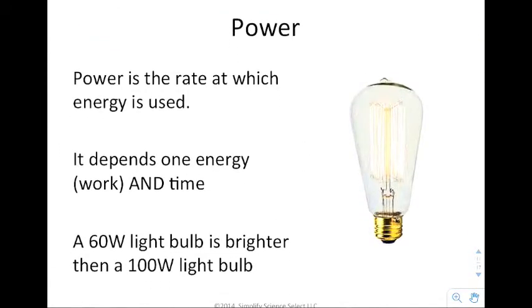Power is the rate at which energy is used, and it depends on energy, work, and time. A 60 watt light bulb is brighter than a 100 watt light bulb. If you plug them in right next to each other, the 100 watt light bulb puts out a lot more light every second than the 60 watt light bulb does.